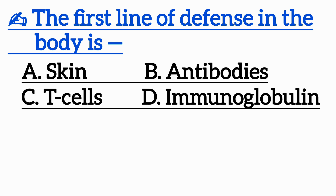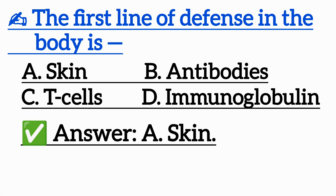Question 8: The first line of defense in the body is — Option A: Skin, Option B: Antibodies, Option C: T cells, Option D: Immunoglobulin. Correct answer is Option A: Skin.